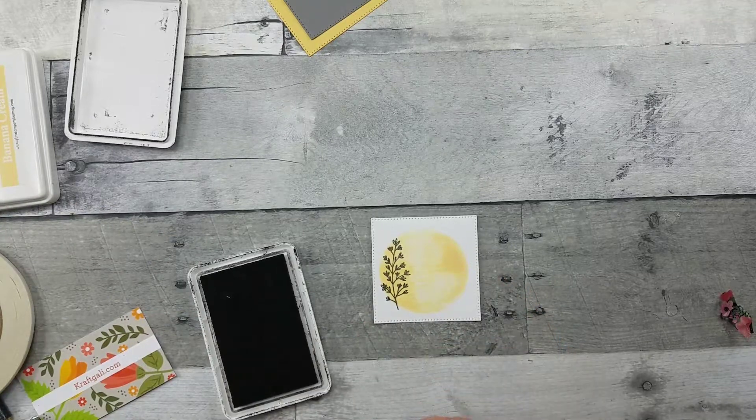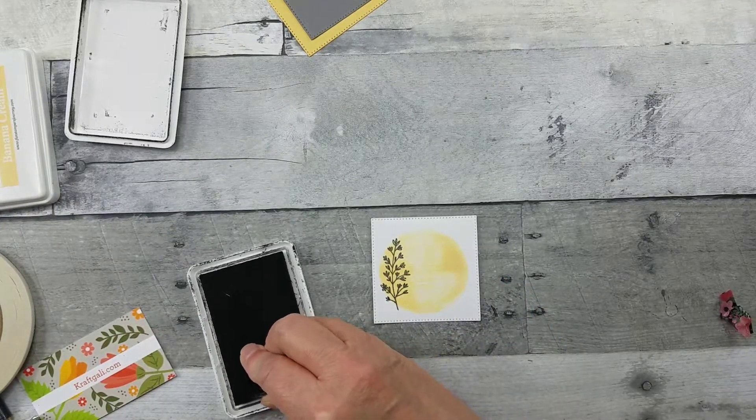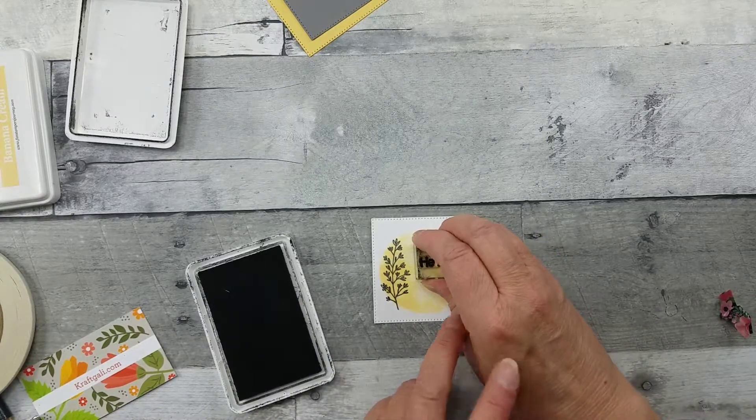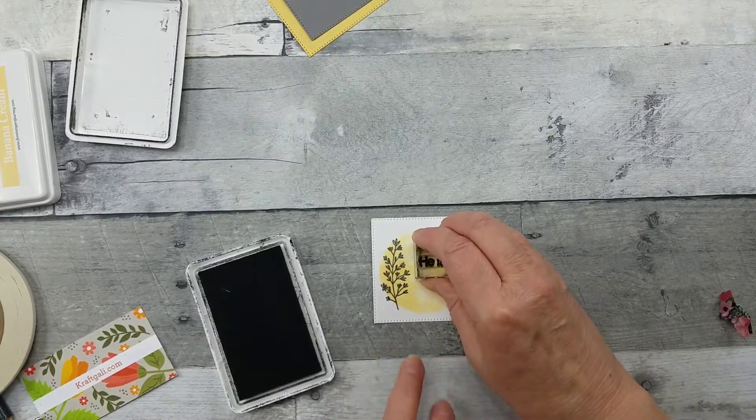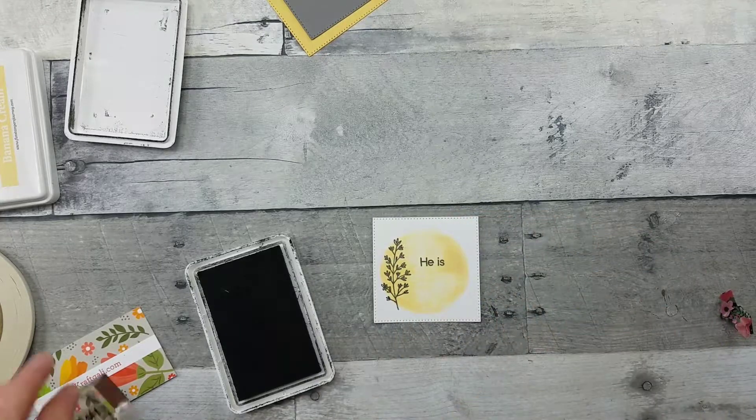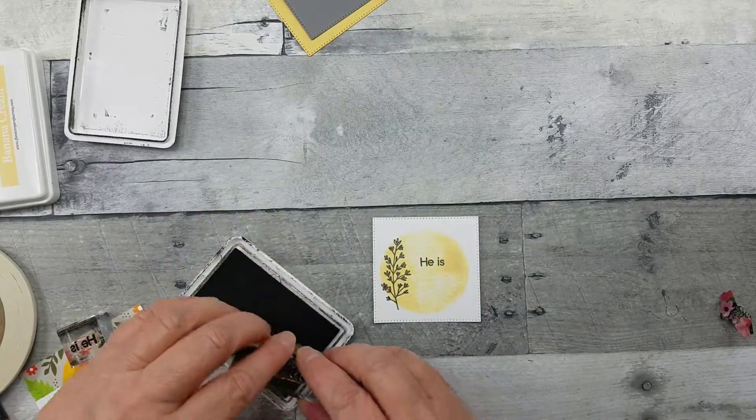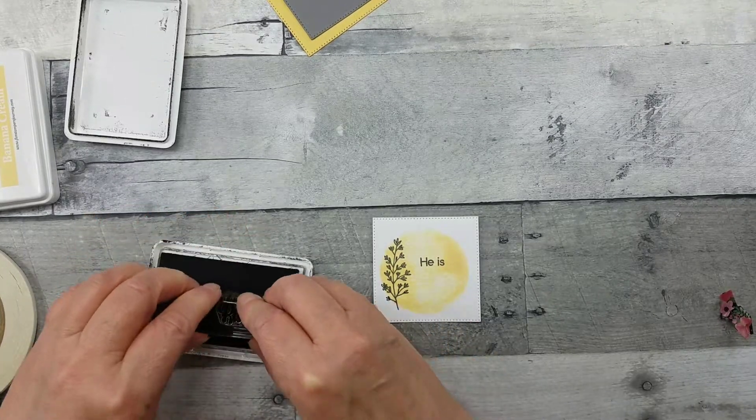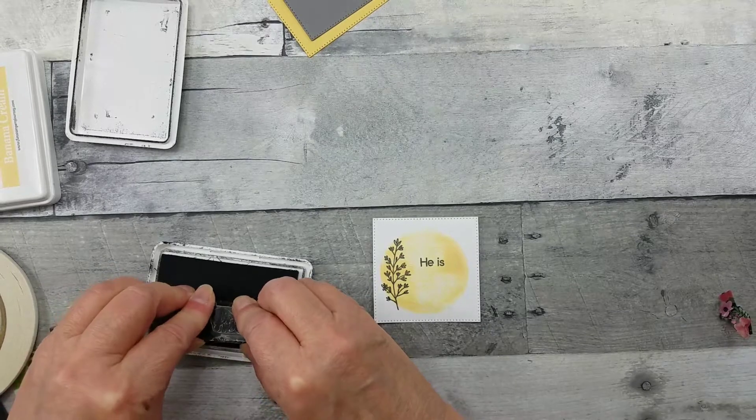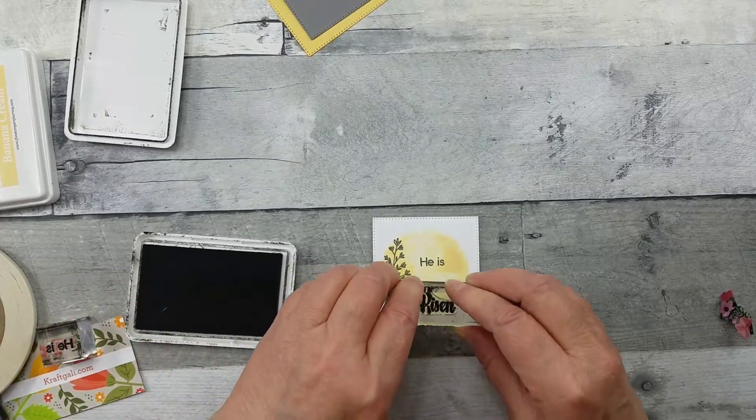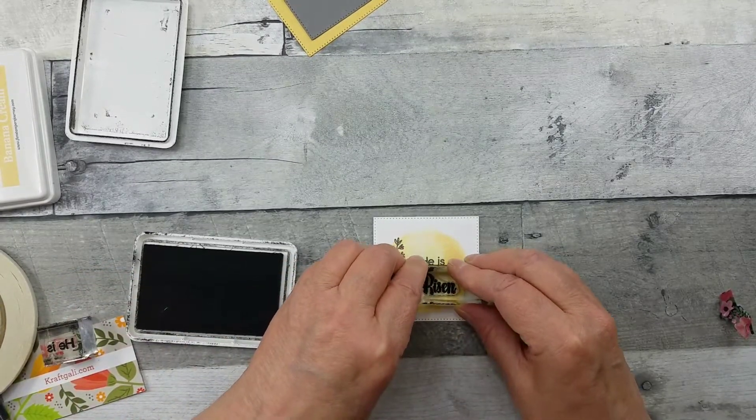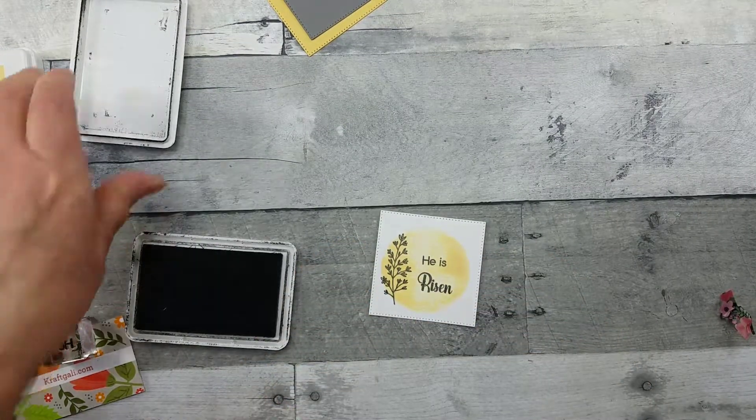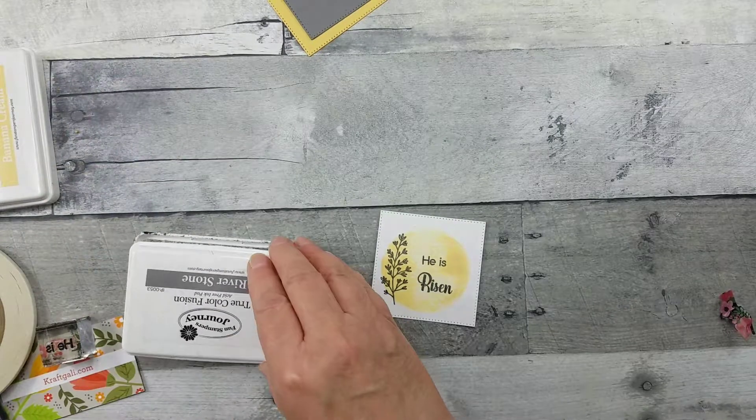Now this is from the Paper Smooches Faith Sampler - straight down, straight back up. And I like this Faith Sampler; it has so many words that you can create your own saying. And again if you've seen my other videos, you've seen how I've mixed and matched those. I think Easter's coming in April sometime, so this would make a lovely Easter card.